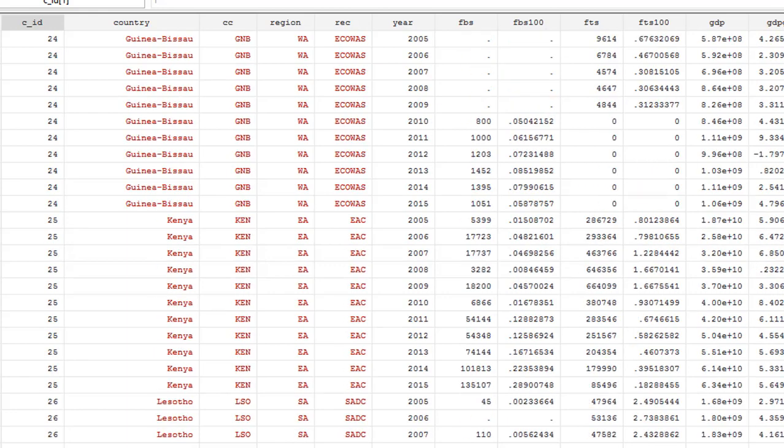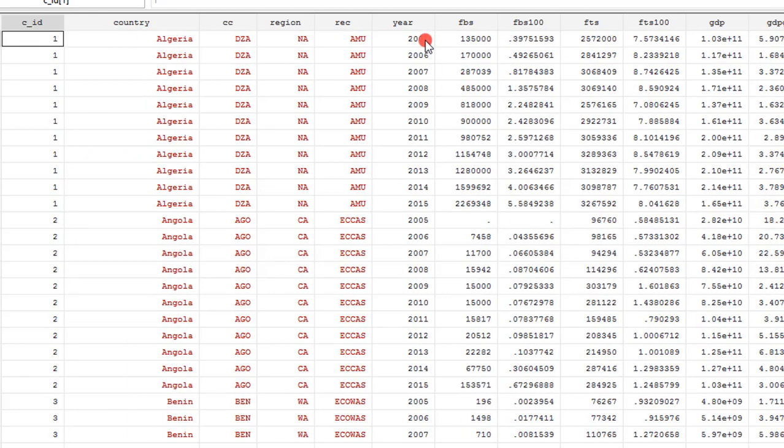Each country in the sample has 2005 to 2015 observations, so 11 years for each of the 54 countries. You can see the structure here: sub-regions, another structure here, REC meaning regional economic communities. What I want to do is analyze this data on regional basis and on REC basis. So let's see how that goes.